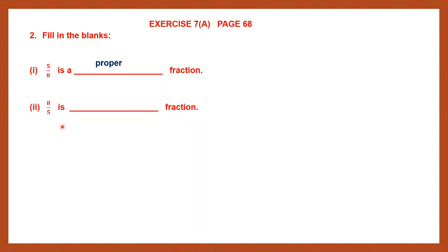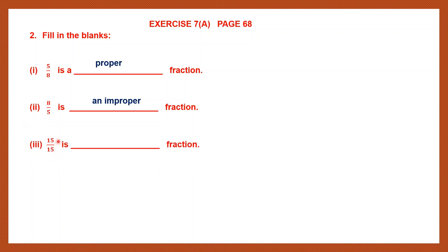Question 2: This time we have 8 by 5 where the numerator is greater than the denominator. Such a fraction is called an improper fraction. Question 3: Here we have 15 by 15. Both are equal — numerator and denominator are equal. Such a fraction is called an improper fraction.